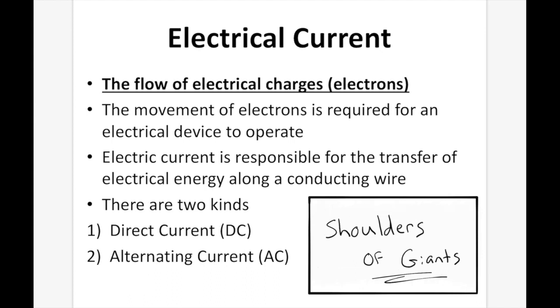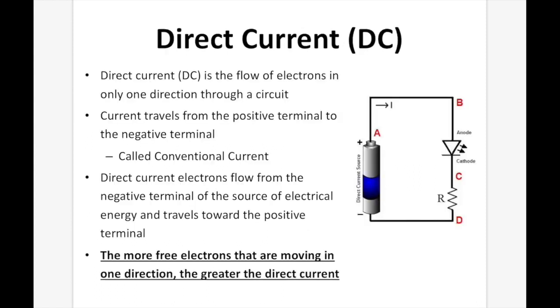Electrical current. Electrical current is the flow of electrical charges — electrons. The movement of electrons is required for an electrical device to operate. Electric current is responsible for the transfer of electrical energy along the conducting wire, and there are two kinds of electric current: direct current and alternating current. Direct current, or DC.